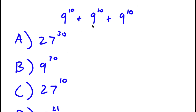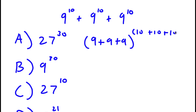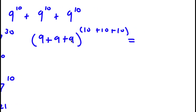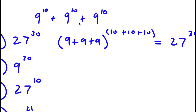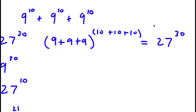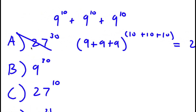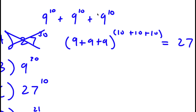We want to figure out which answer choice is correct. For answer choice A, the method used is to add all the bases and exponents: 9 plus 9 plus 9 to the power of 10 plus 10 plus 10, which gives 27 to the power of 30. However, this method is actually wrong — you can't just add the bases and add the exponents.